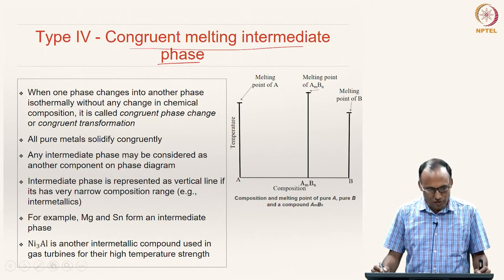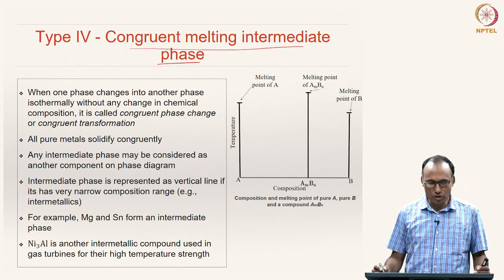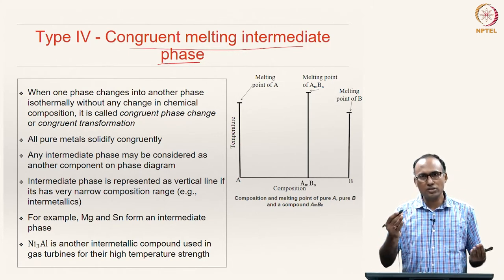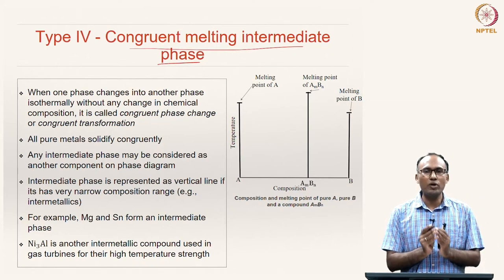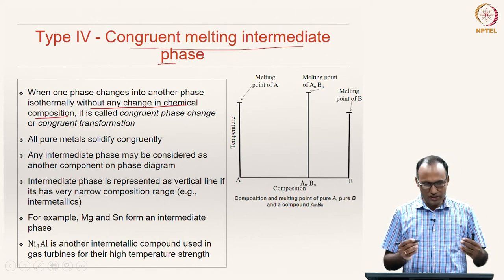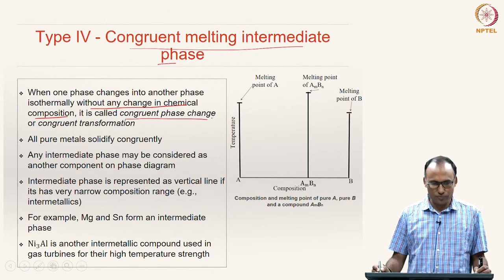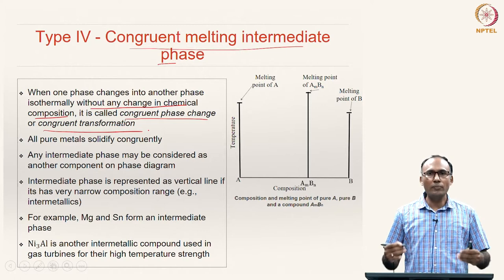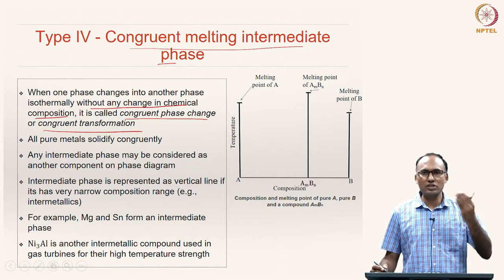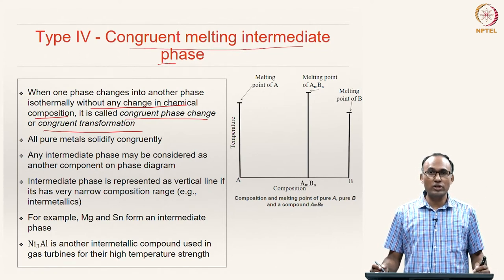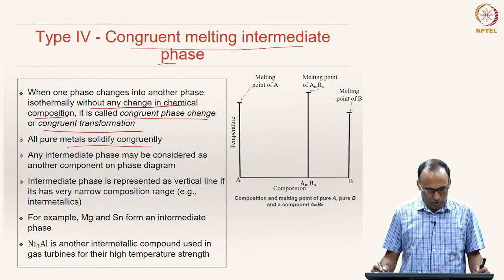What do we mean by a congruent melting alloy? When one phase changes into another phase isothermally—that is, solidification happening at a constant temperature from liquid to solid, or any phase change happening at constant temperature—the resulting phase must also have the same composition. Without any change in chemical composition: that is the key. If the phase change happens isothermally without change in chemical composition, such a phase change is called a congruent phase change or congruent transformation. By that argument, all pure metals solidify congruently, because a pure metal's composition above and below the melting temperature remains the same—at constant temperature it solidifies, and after solidification the composition remains the same.